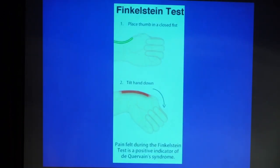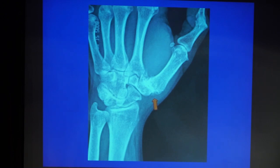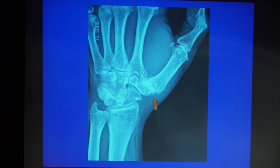If the pain is more distal — not at the radial styloid but just distal to the snuff-box depression — the most likely diagnosis is osteoarthritis of the carpometacarpal joint of the thumb. So the simple rule: if tenderness is proximal to the depression, the initial diagnosis is De Quervain's; if distal, the initial diagnosis is osteoarthritis. If you want confirmation, you can get an X-ray.